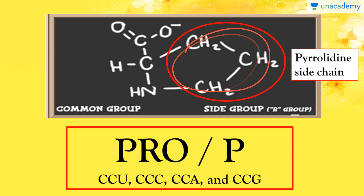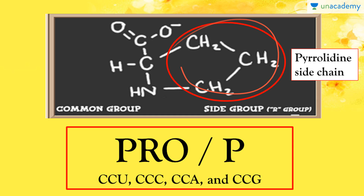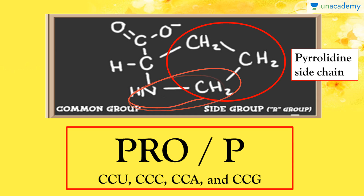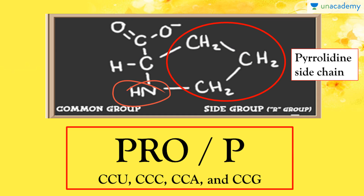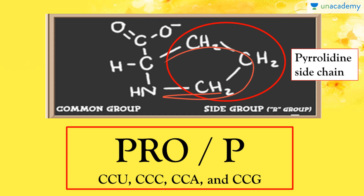We can define an imino acid as a molecule with both an imine — that is the C=NH bond — and a carboxylic group, that is the COOH. So an imino acid contains both these functional groups attached to the same carbon atom and also to the side chain. Here you can see the two functional groups attached to both the alpha carbon and the side chain — this is how you can define an imino acid.